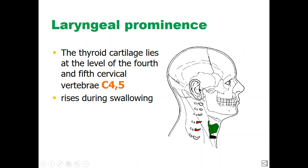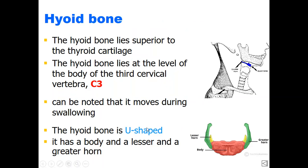The thyroid cartilage can be correlated with the vertebral scale of the neck. The thyroid cartilage, shown as a green pillar, is at the level of C4 and even C5 vertebrae. The thyroid cartilage is part of the neck structures that move up and down during swallowing due to the attachment of many muscles, which we will cover in the next lectures.